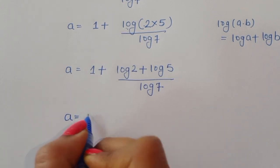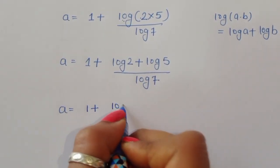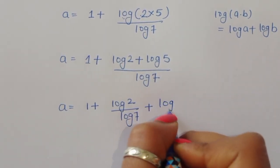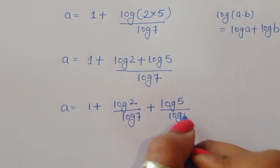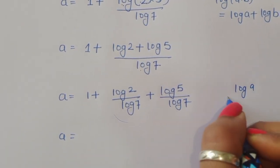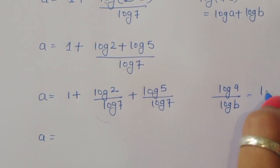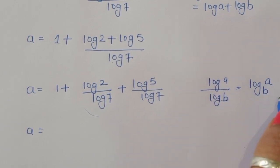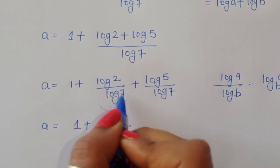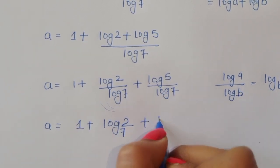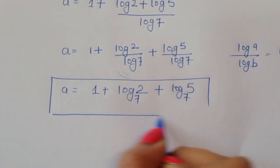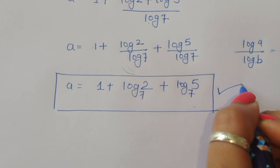Now using the change-of-base formula: log of A divided by log of B is equal to log of A to the base B. So A is equal to 1 plus log of 2 to the base 7 plus log of 5 to the base 7. This is the final solution.